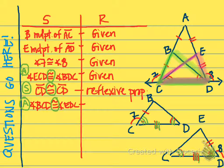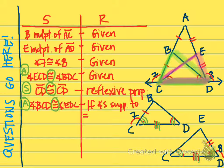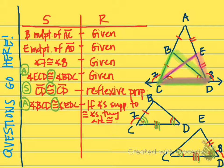The reason that these two angles were congruent: if angles are supplementary to congruent angles, they are congruent. Now by ASA, I can state that those two triangles are congruent.